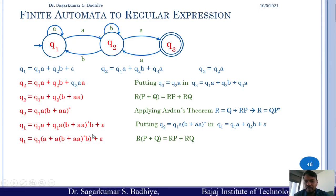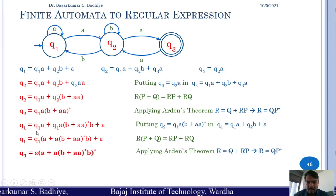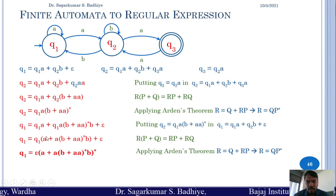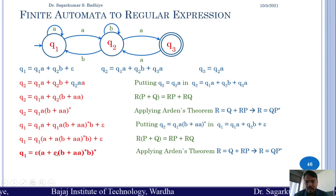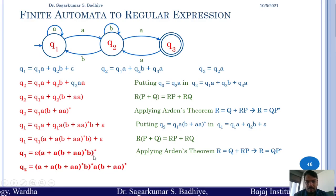This equation is of the form r = q + r·p, where q is ε and p is (a + a·(b + aa)*·b). Since ε concatenated with anything is the same thing, applying Arden's theorem gives the solution: q1 = (a + a·(b + aa)*·b)*.